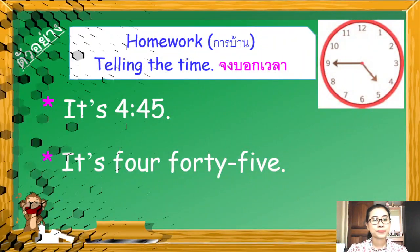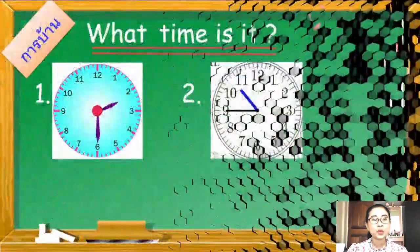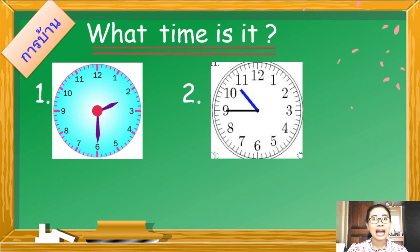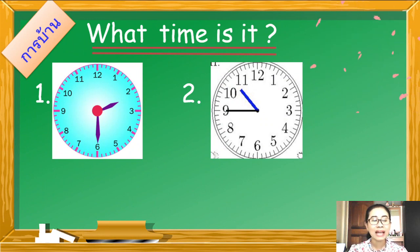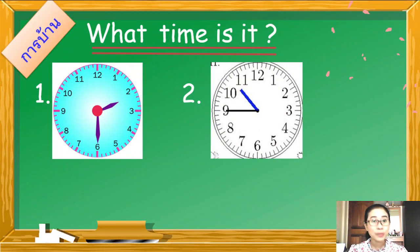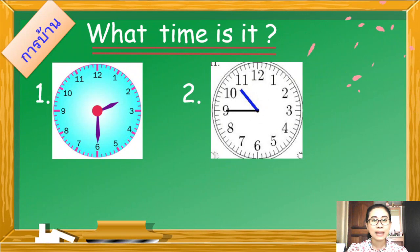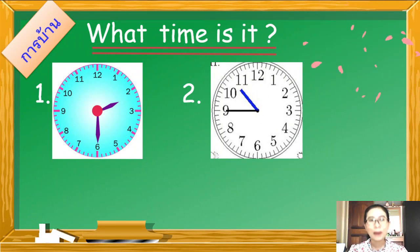ต่อไปค่ะ คุณครูให้การบ้าน 2 ข้อนะคะ ข้อที่ 1 คุณครูให้รูปนาฬิกามา นักเรียนก็แต่งประโยคตามตัวอย่างที่สอนไป พอเสร็จข้อที่ 1 แล้วขีดเส้นใต้ปิด แล้วเขียนข้อที่ 2 ต่อเลยค่ะ ให้วาดรูปนาฬิกาด้วยนะคะ แล้วเริ่มเขียนที่คำว่า What time is it? ตอบเสร็จขีดเส้นใต้ปิด Very easy.